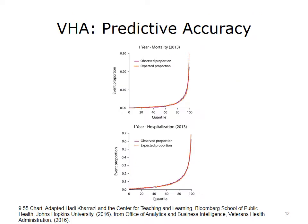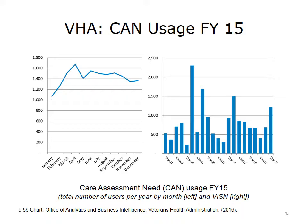VHA's CAN model has a high predictive power. The adjusted R-square of the model for predicting hospitalization and mortality is in the 0.8 to 0.9 range. The diagrams show the one-year expected and observed mortality and hospitalizations. Developing reliable and valid models is a challenge, but making sure that these models are effectively used in the workflow is a more complex challenge. The VHA has effectively rolled out the CAN model, and a large number of users have actively used it to manage the care of the population with the highest risk. The diagram on the left shows the line chart of the CAN model's use in fiscal year 2015, and the bar chart on the right shows the number of users per VHA's regional centers.